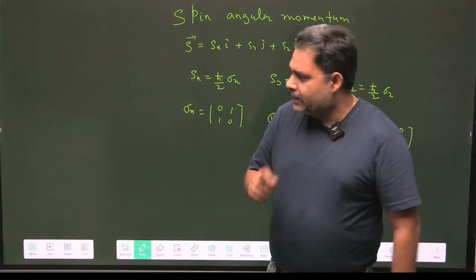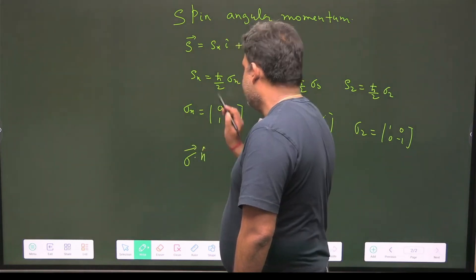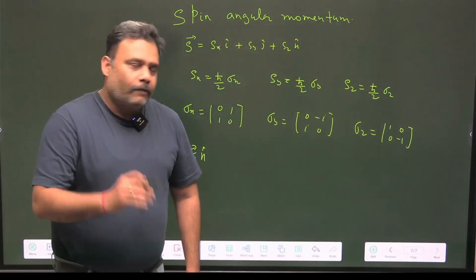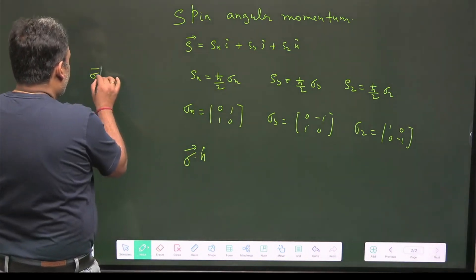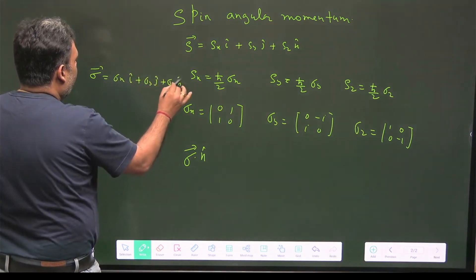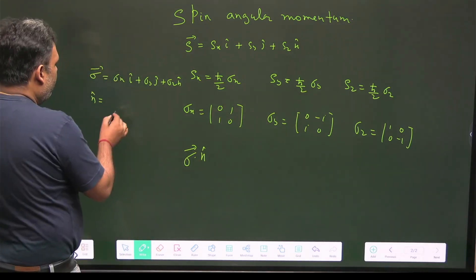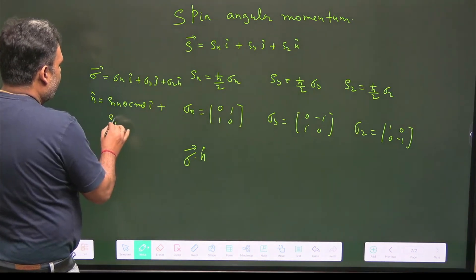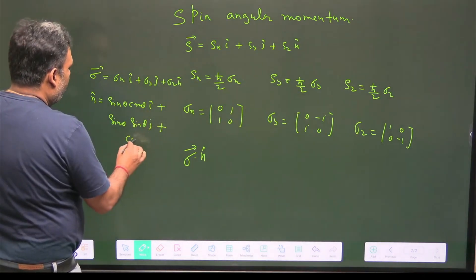What I want to find is the operator σ·n̂ and understand how useful it is. The vector σ can be written as σx î + σy ĵ + σz k̂. We take n̂ in spherical polar coordinates, so n̂ = sinθ cosφ î + sinθ sinφ ĵ + cosθ k̂.